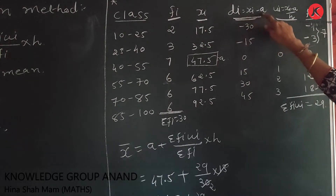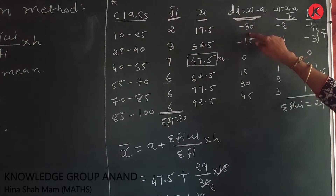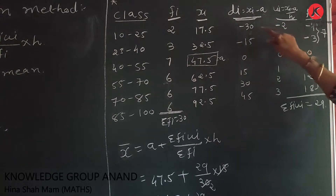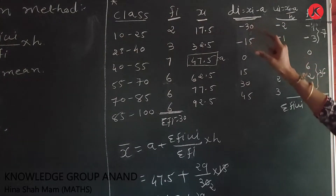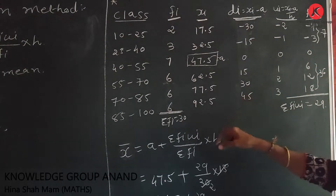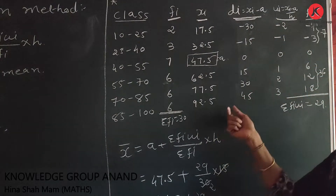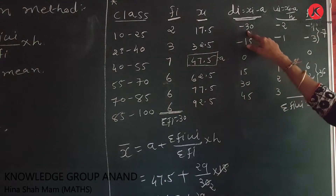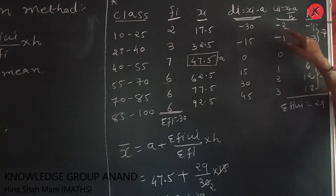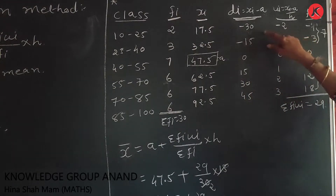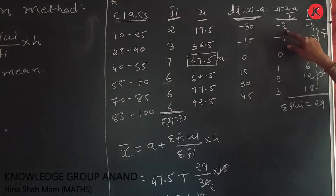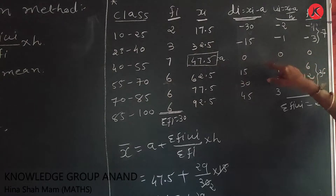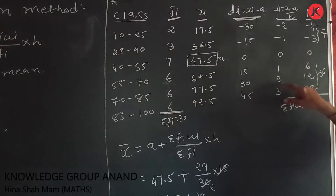For the first class: xi - a = -30, divided by h = 15, gives -30/15 = -2. The ui values are: -2, -1, 0, 1, 2, and 3.